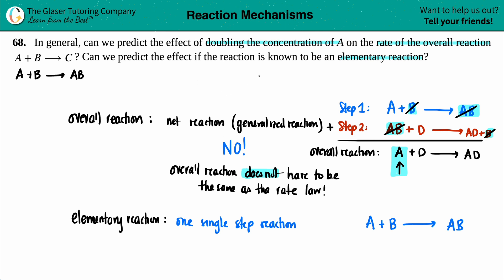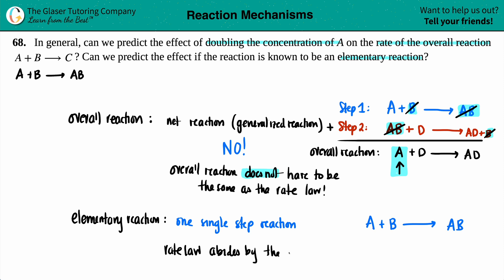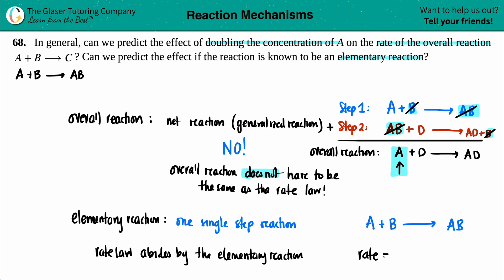But can we predict the effect if the reaction is known to be an elementary reaction? In this case, it's only that one single step, so everything is laid out on the table. Your rate law always abides by the elementary reaction because it's only one step. The rate law equals K times the concentration of the reactants raised to their coefficients — so there's a one and a one. It's just a coincidence if the overall reaction happens to match.